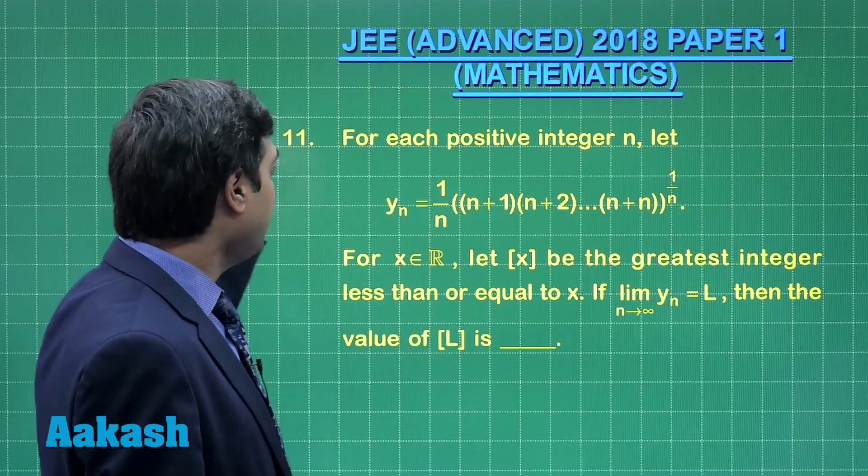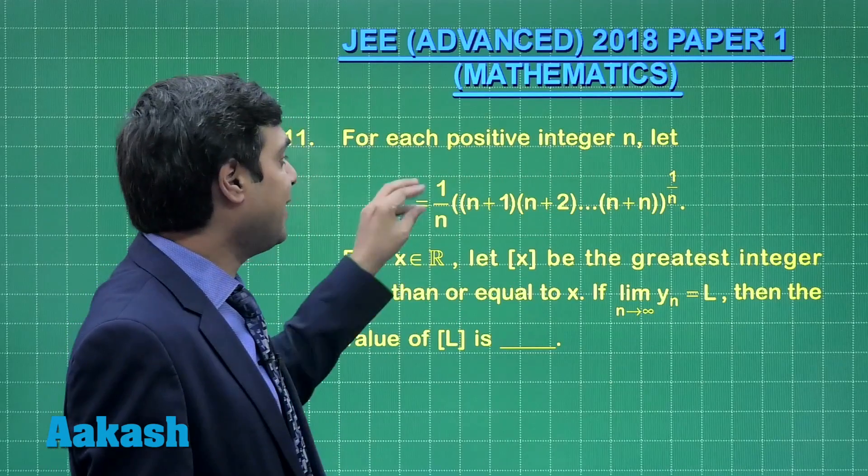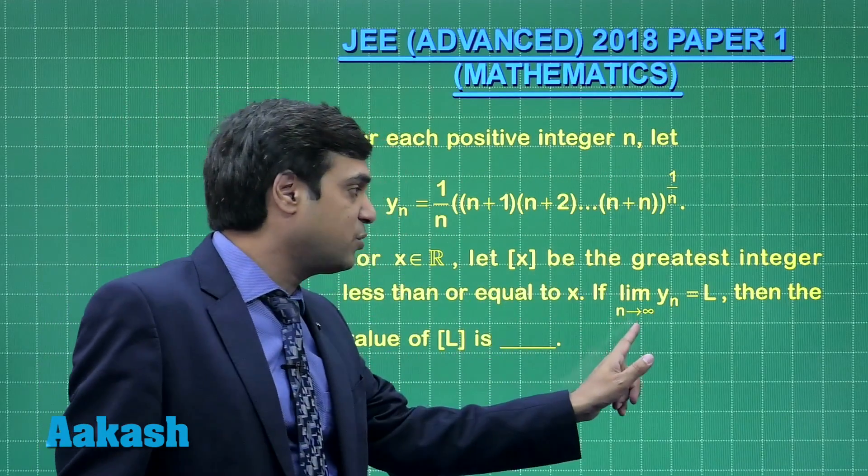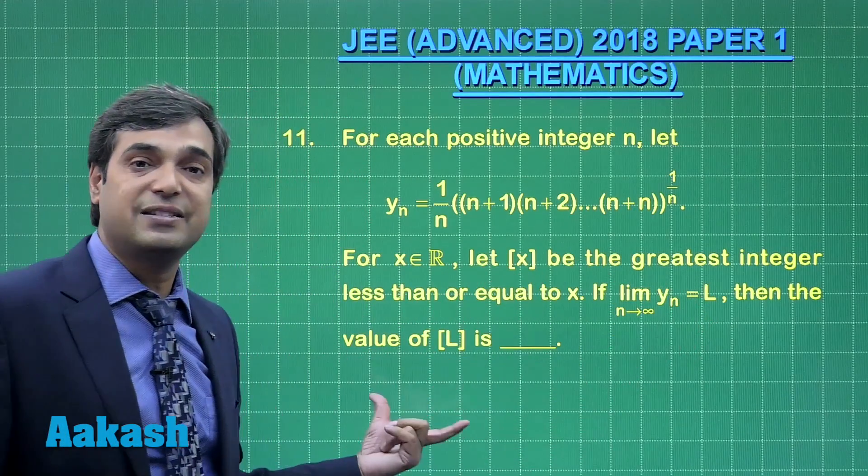Let us consider question number 11. For each positive integer n, let y_n is given to us this way. We have to find limit n approaching infinity y_n. Let us say this is L, then find greatest integer L.